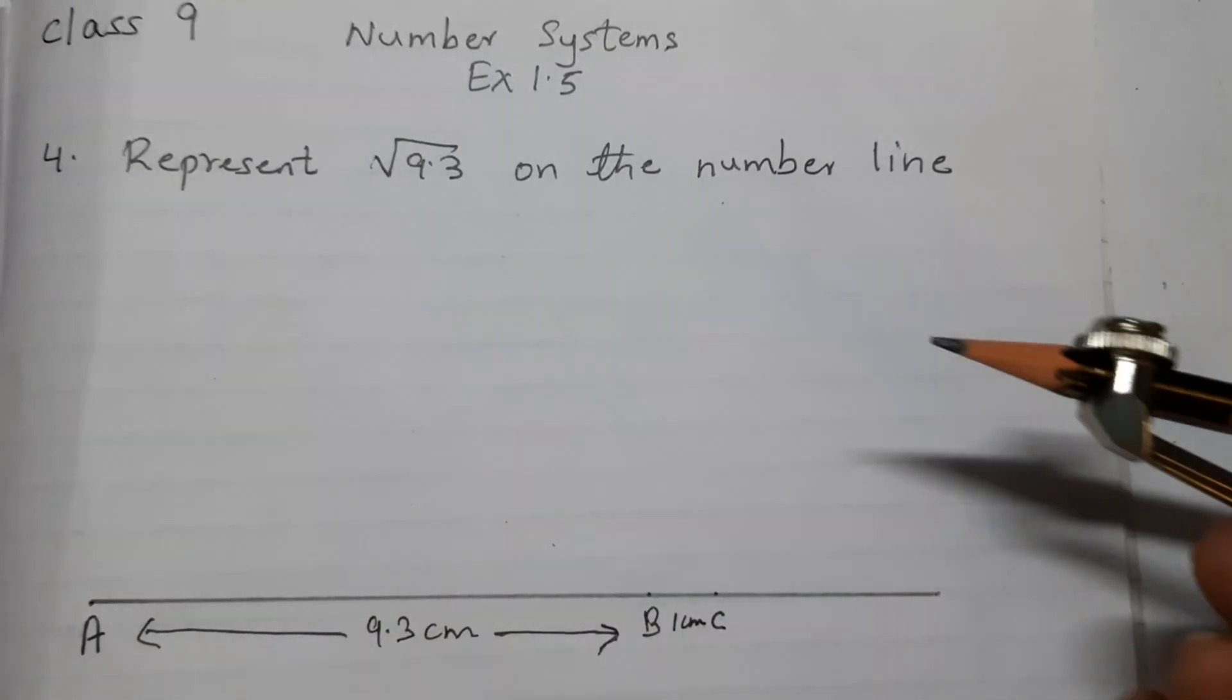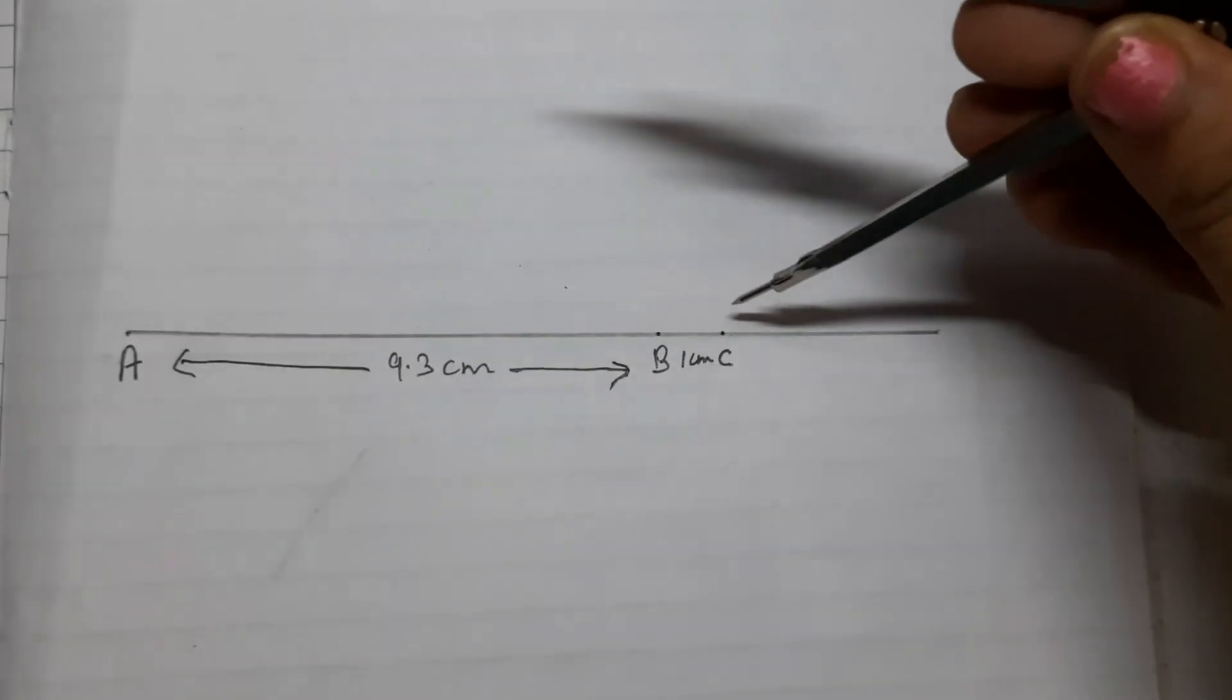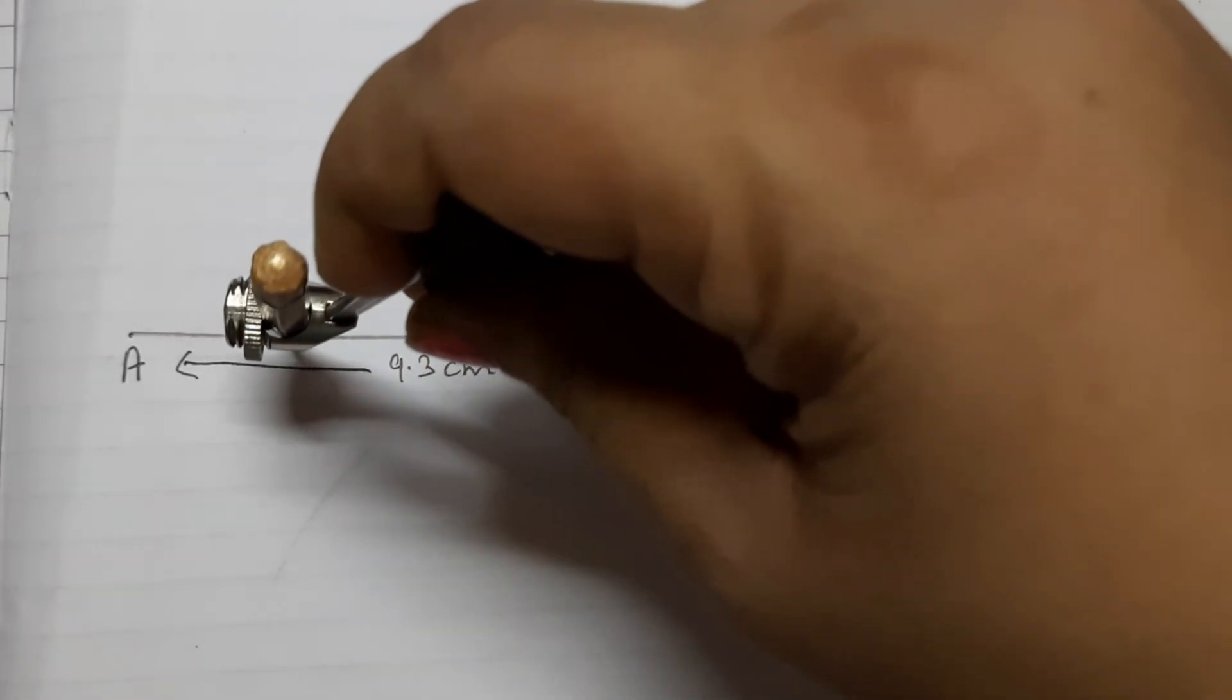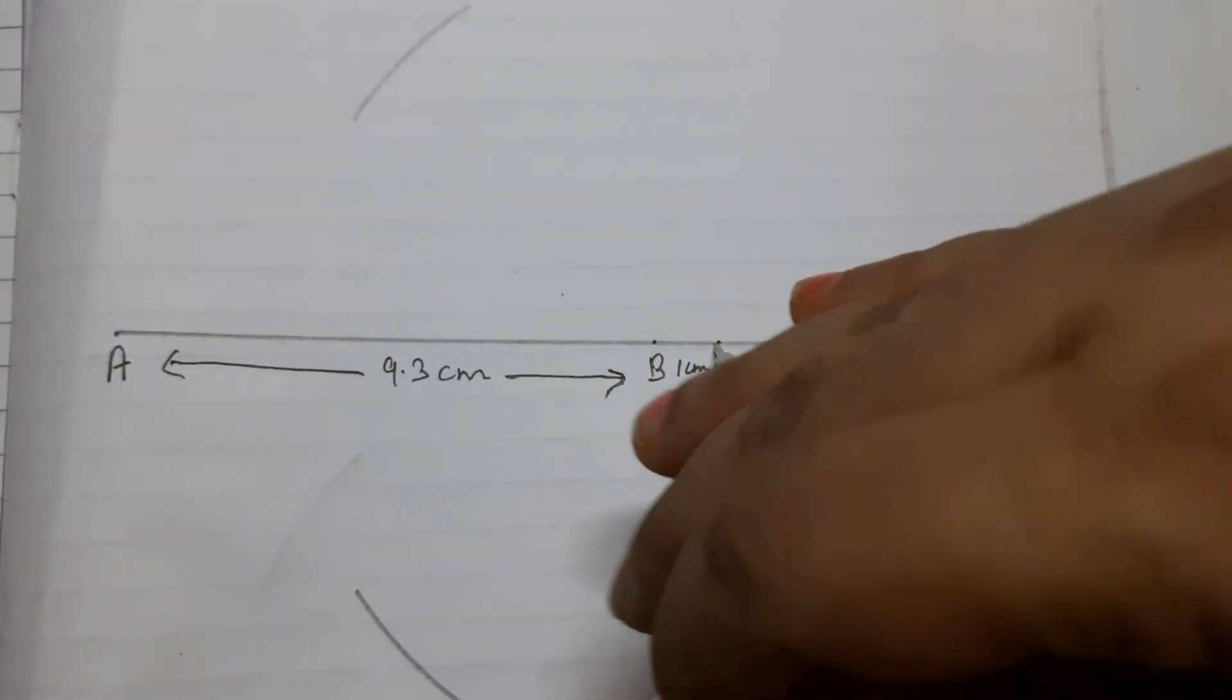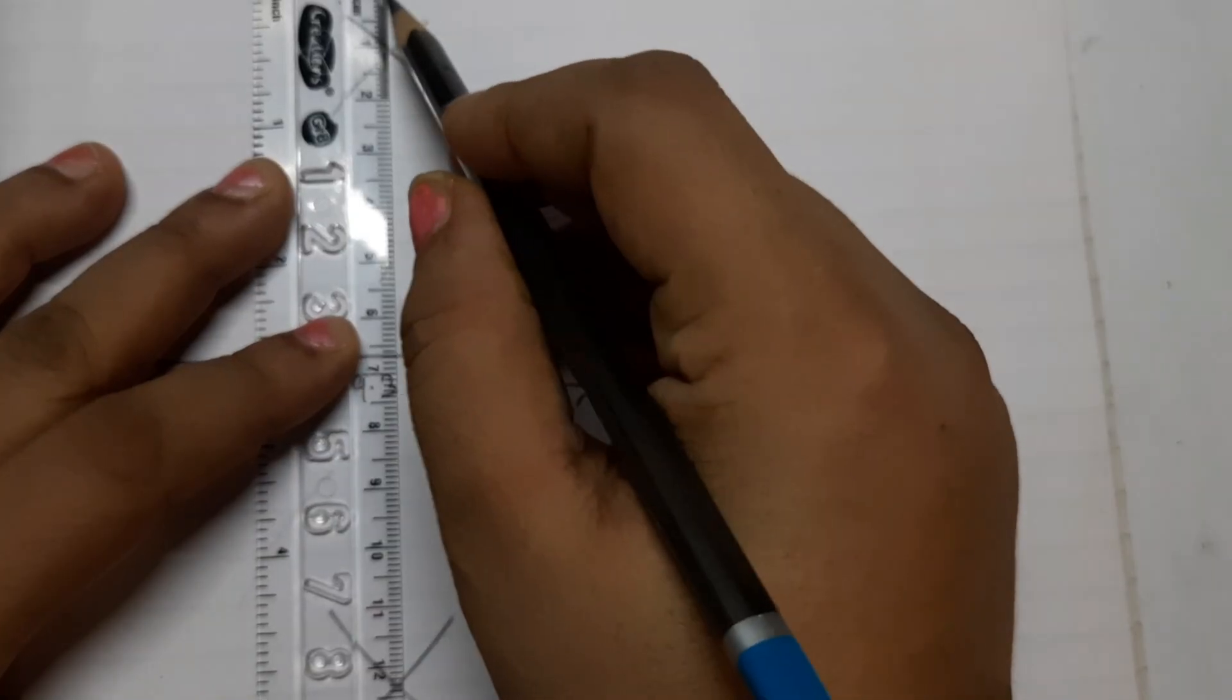For this use a compass, take more than half the length of AC, draw an arc above the line and then below the line. With the same radius from point A, draw an arc intersecting the previous two arcs. Find these two points.